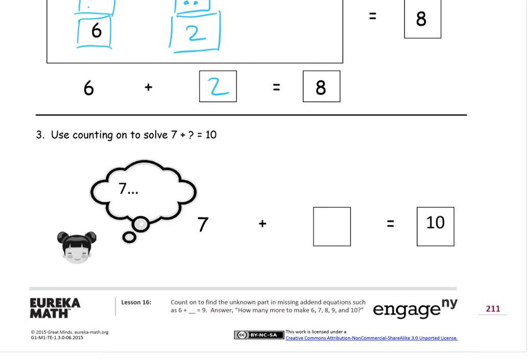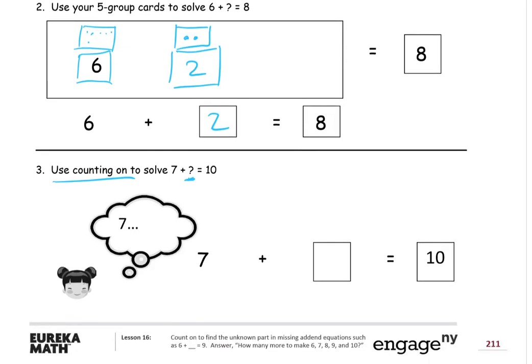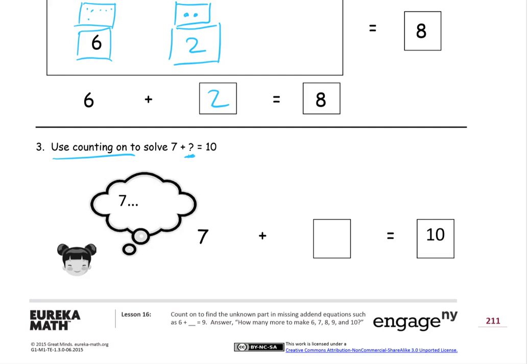And now this one we're going to use the strategy of counting on. So using three different strategies to figure out what a missing, to find a missing addend. And so here's a little girl, she's counting on her head. She starts with 7 and she has to get to 10. So what did she have to count on?